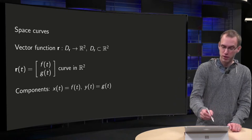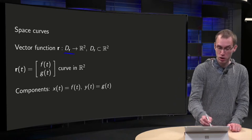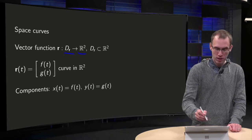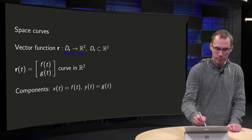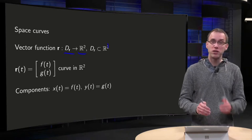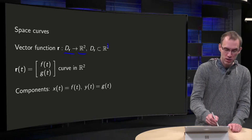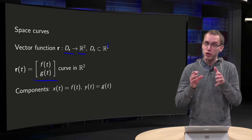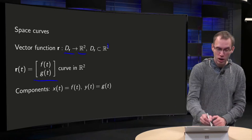What do we have? A vector function from some domain to R2. Two components, where the domain has some subset of R. Our R of T will consist of two components, F of T and G of T. And we will interpret this as points in R2.